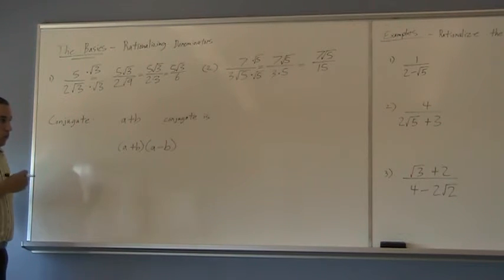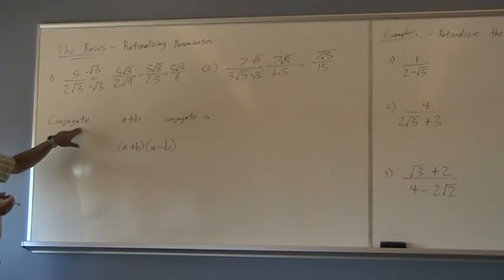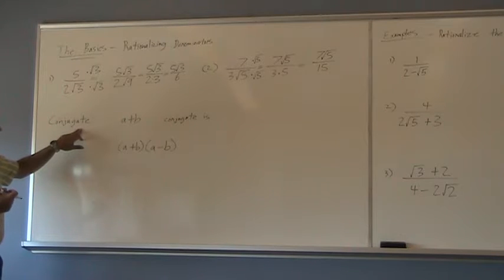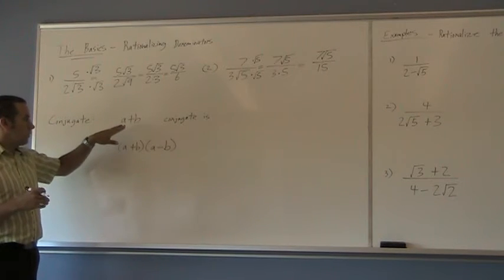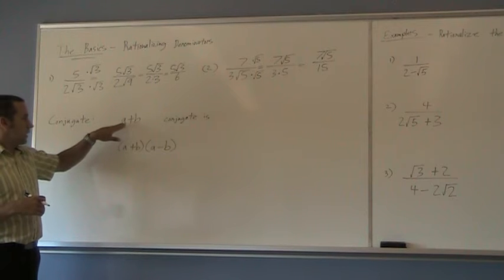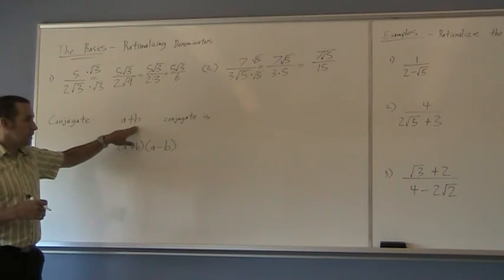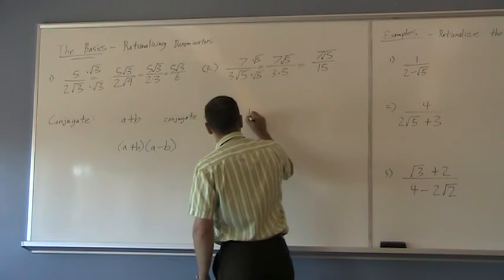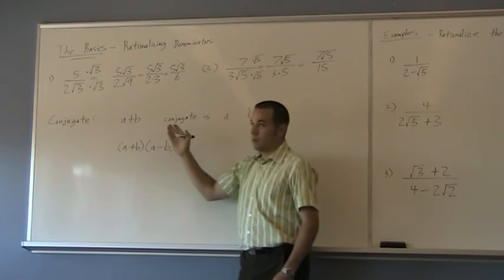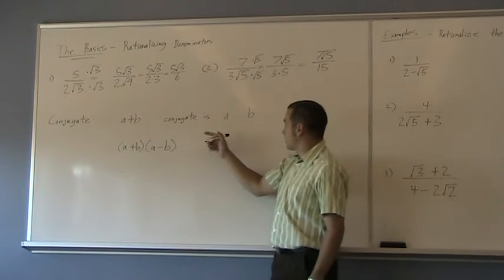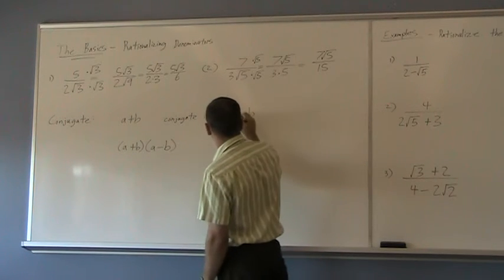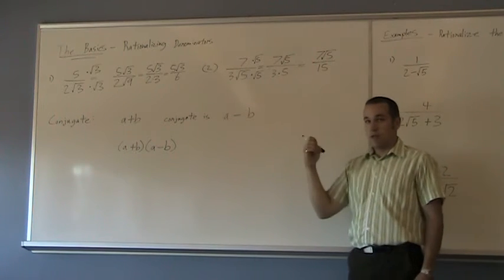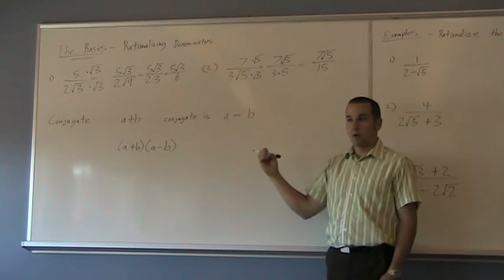Now, before we move on to the next rationalizing topic, we're going to talk about conjugates. So, in general form, the conjugate of something like A plus B is the same two numbers, A and B. The numbers stay the same. The conjugate of A plus B is to change the signs. So, I have a plus in between, so I make it a negative. So, the conjugate of A plus B is A subtract B.